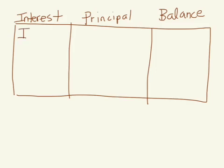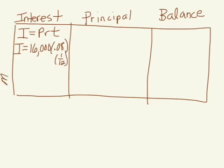Interest, I is equal to P times R times T. We use simple interest for your amortization table. Our principal in the first month is $16,000. Our interest rate is 8%, and our time here is 1 over 12 because we're doing this per month. This is month 1.